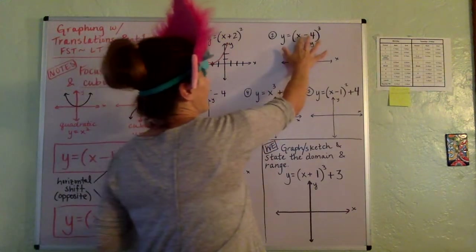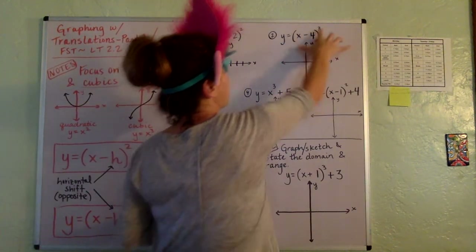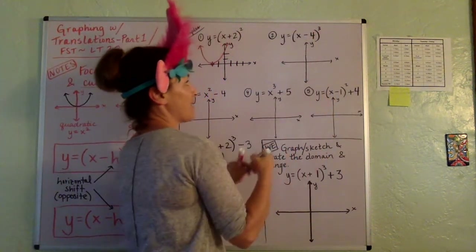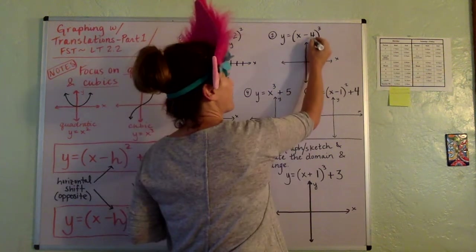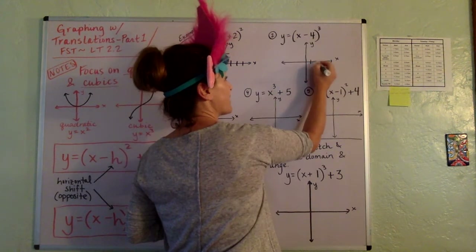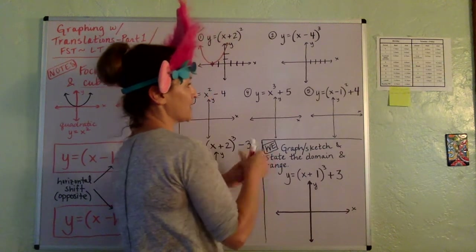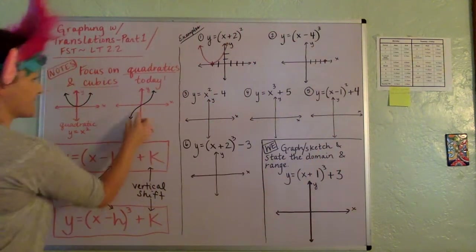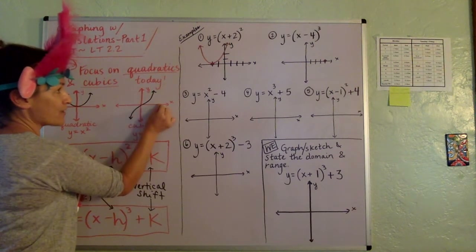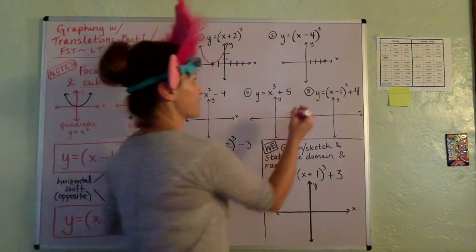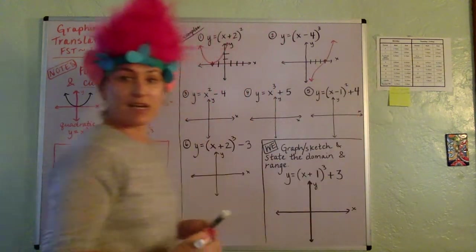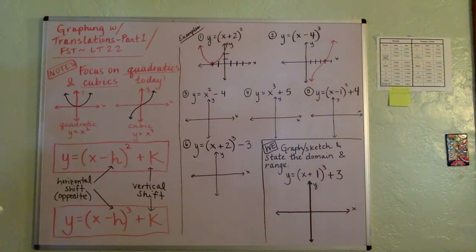Next one: we have x minus 4 in parentheses, and then it's cubed. Again, there's nothing on the end, so we don't have any vertical shift. We're going to go the opposite of the way it says, so we shift over to positive 4. I'm just going to put a point right there. It's as if we've taken the parent cubic and shifted it 4 units over. Just a little horizontal slide. A quick sketch looks something like this.